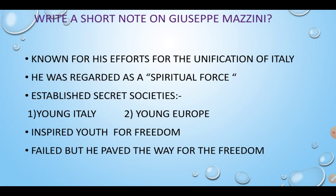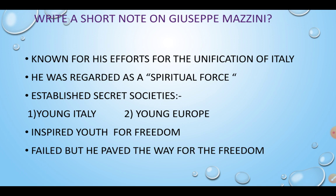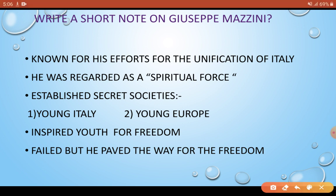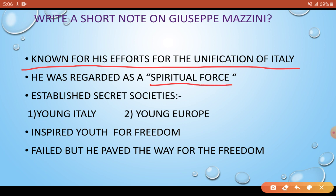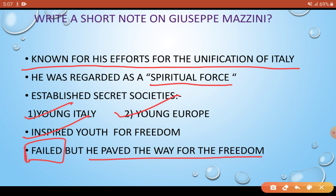Let's start. The first question is: write a short note on Giuseppe Mazzini. You need to know that Giuseppe Mazzini is known for his efforts in the unification of Italy. He is called the spiritual force of Italy. He established secret societies — Young Italy and Young Europe — through which he inspired youth to achieve freedom. Although he ultimately failed in his efforts, he showed people the path to freedom.